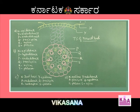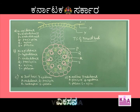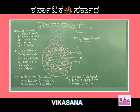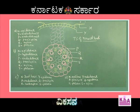The anatomy of flowering plants covers the main parts: root, stem, and leaf. This topic is important for the CET examination. We will study both dicot and monocot types.